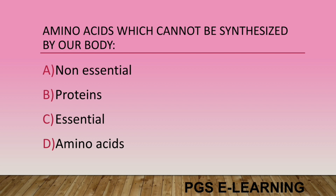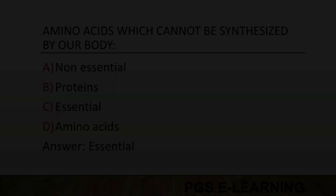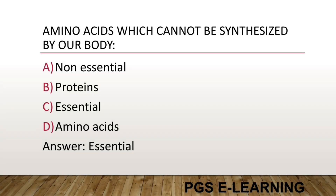Amino acids which cannot be synthesized by our body are called: Option A, non-essential. Option B, proteins. Option C, essential. Option D, amino acid. Correct answer is essential.